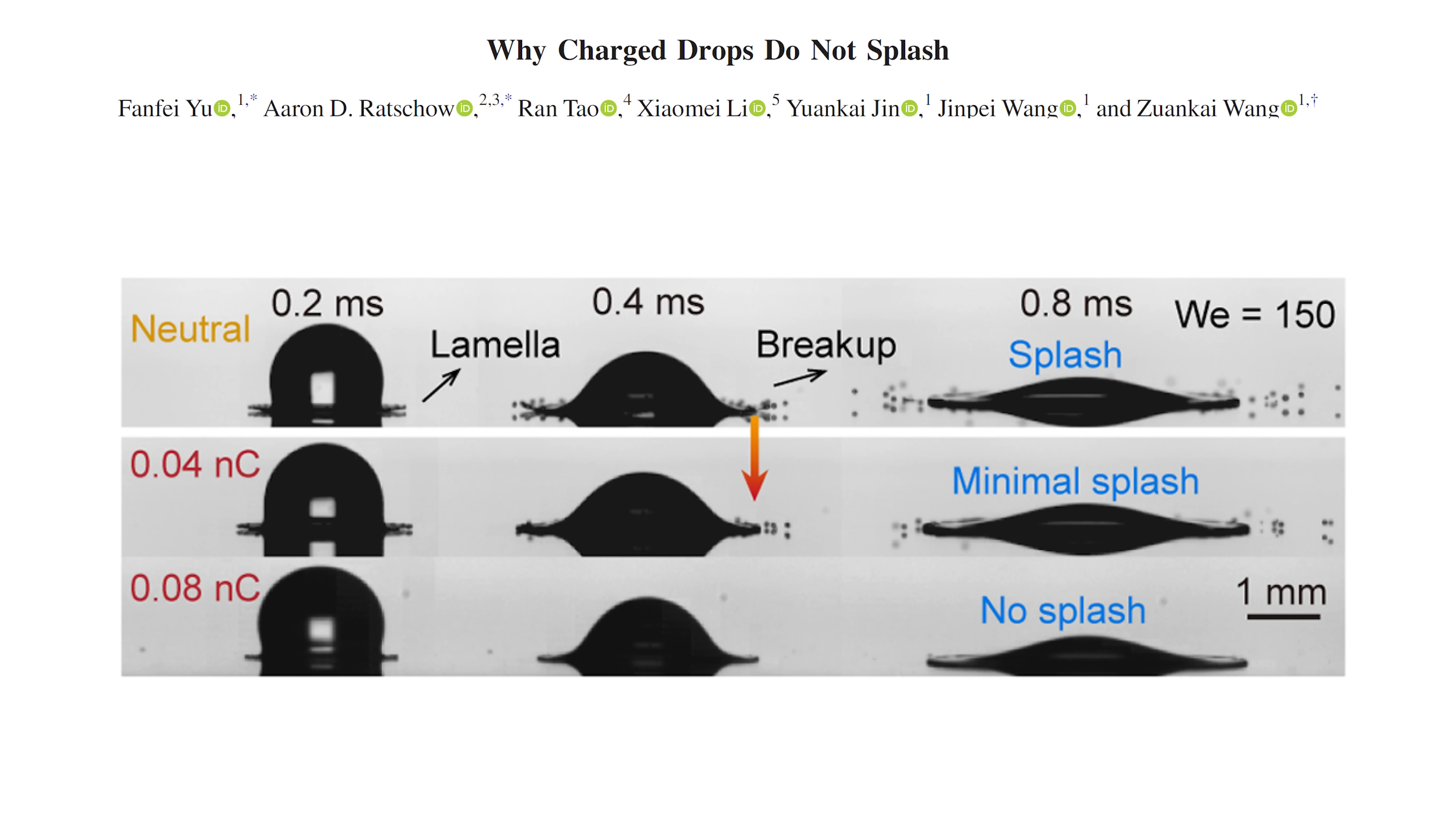The unit you see here, NC, is actually nanocoulombs. It's a measure of how much charge is on the drop. So with less than 0.1 nanocoulombs, the splash disappears.